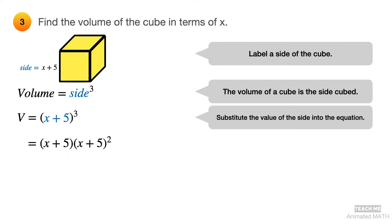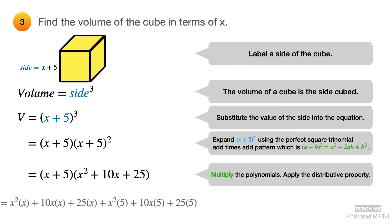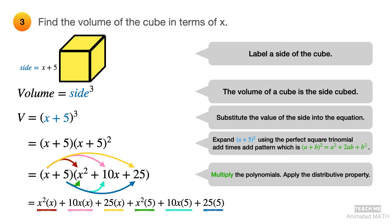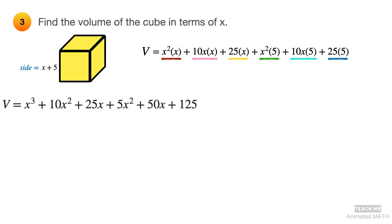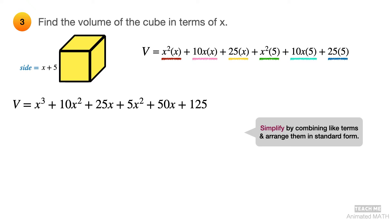You can expand x plus 5 squared using the perfect square trinomial add times add pattern. Apply the distributive property when you multiply the polynomials and expand the equation. Continue simplifying the equation using polynomial addition by combining like terms. And the final answer is x cubed plus 15x squared plus 75x plus 125.